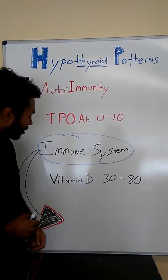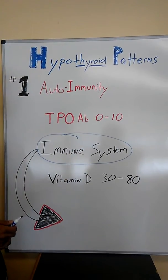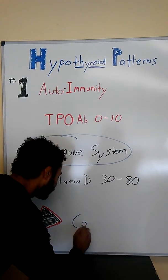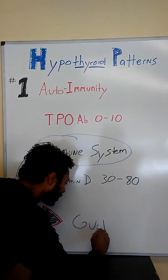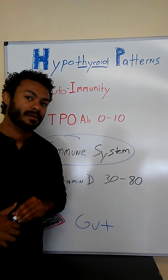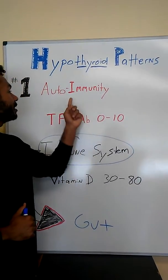Now one last piece to this: where, how can we improve this immune system? Most immune system in our body is located right in our gut. So gut health is foundational when it comes to thyroid health, especially if you're dealing with the autoimmune condition.